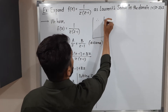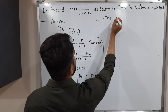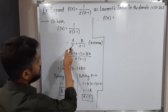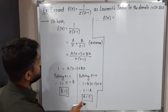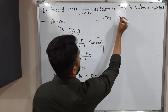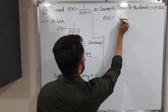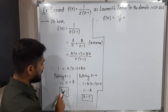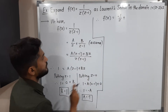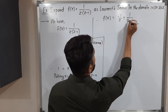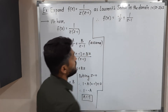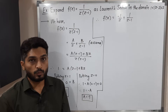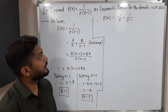Therefore, f(z) can be expressed as: f(z) = -1/z + 1/(z-1). Since A = -1 and B = 1, we have successfully separated the function into two partial fraction terms.